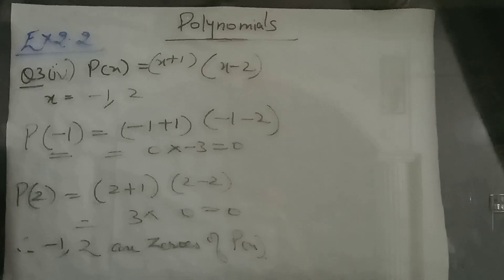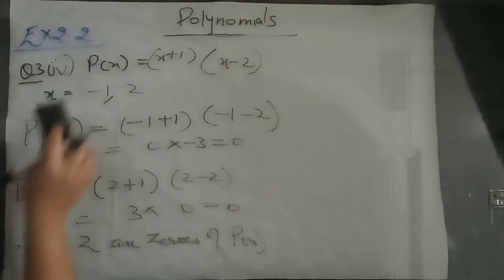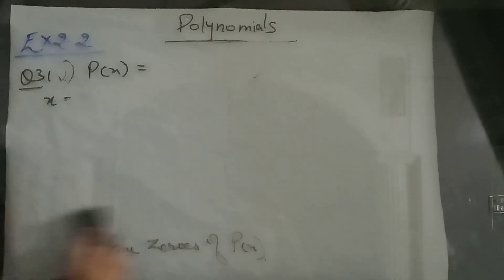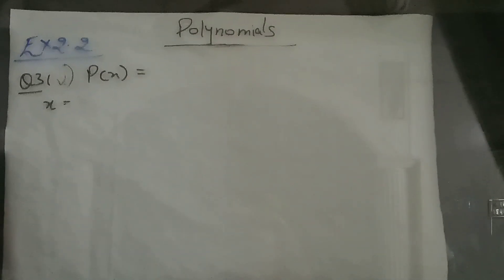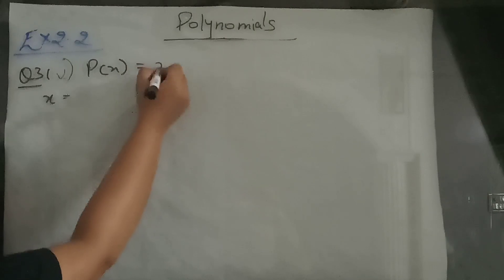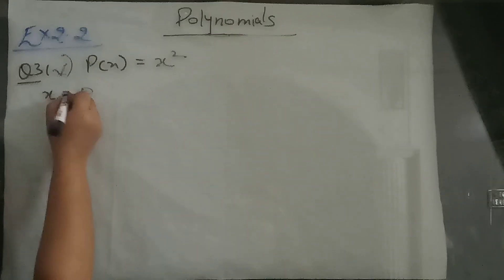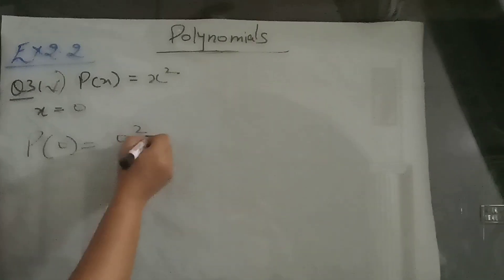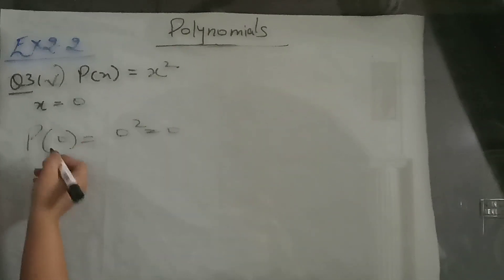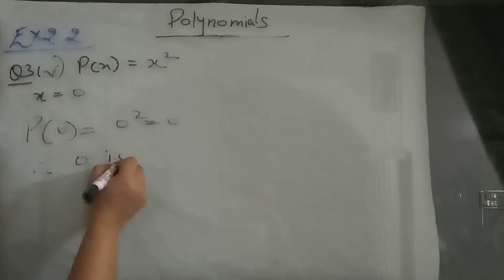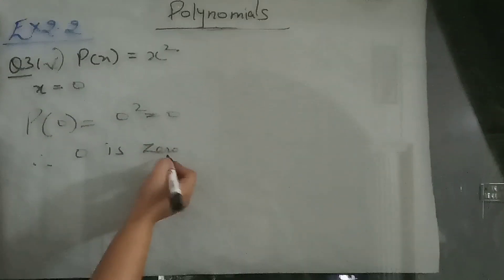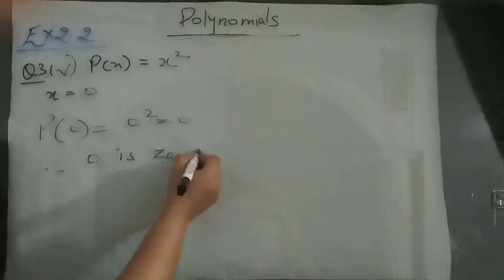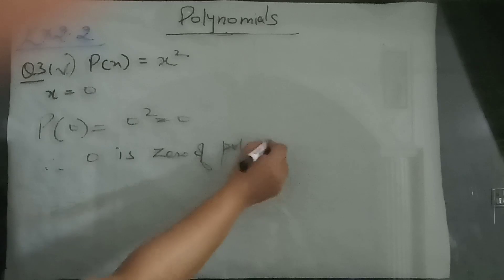Now the fifth part: p(x) = x squared, and we have to verify for x equal to 0. Find p of 0: 0 squared is 0. So 0 is the zero of the polynomial p(x) — it is the root of the polynomial equation.